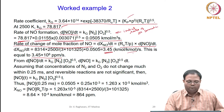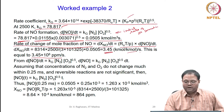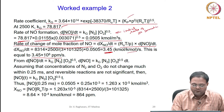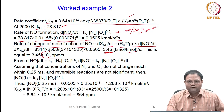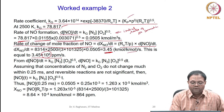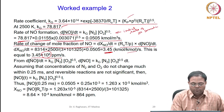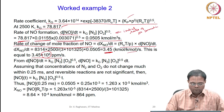Since ppm equals mole fraction multiplied by 10⁶, the initial rate of production of NO is 3.45 × 10⁶ ppm per second.